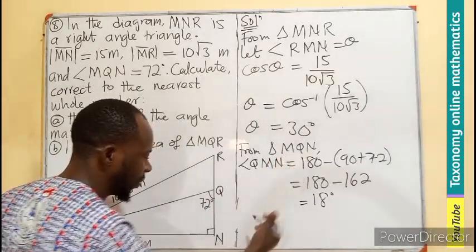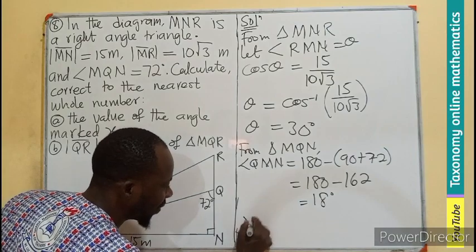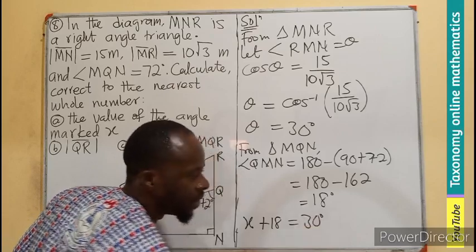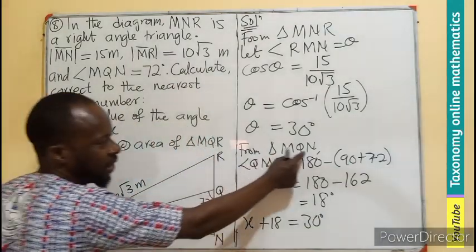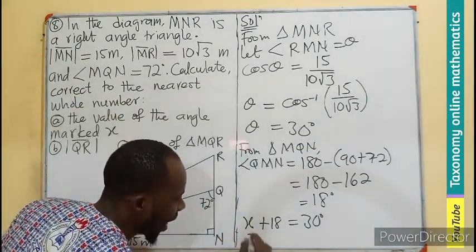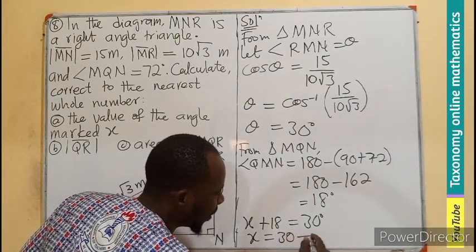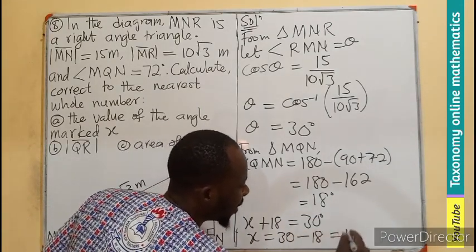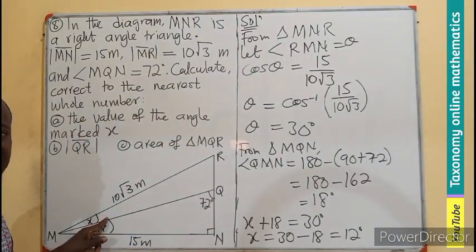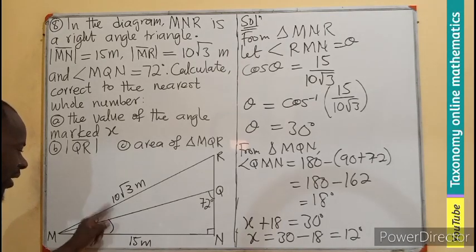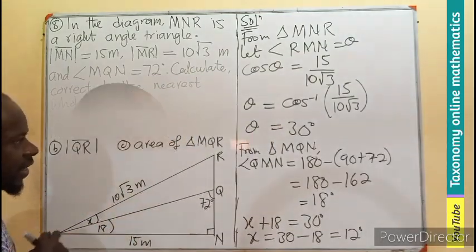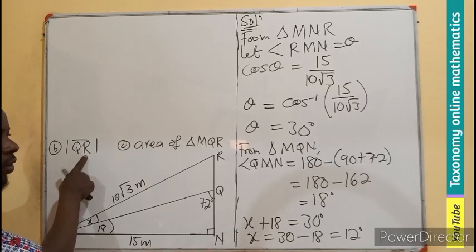Knowing that 18 degrees plus X gives us 30 degrees, we can say angle X plus angle 18 equals 30 degrees. Therefore X equals 30 minus 18, which gives us 12 degrees. So the angle X has a value of 12 degrees and the angle QMN is 18 degrees; the two combined give us 30 degrees. The next thing to find is the length of QR.